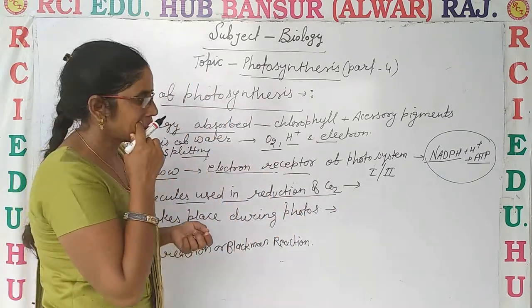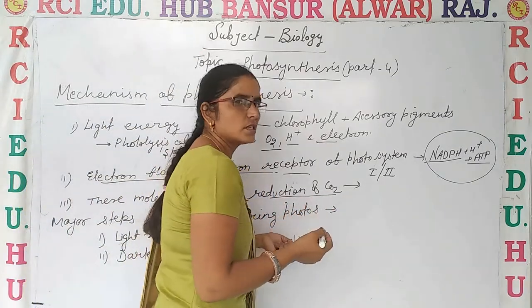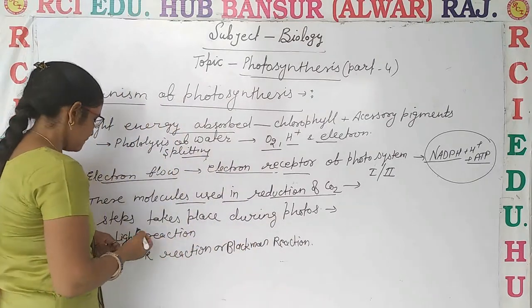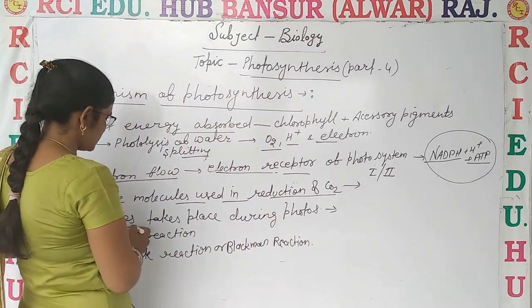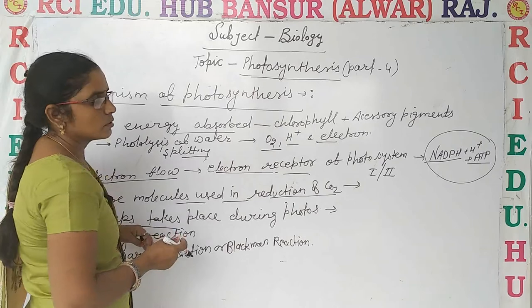This energy stored in NADPH + H⁺ and ATP is then utilized in the reduction of CO₂, and the process of photosynthesis — the production of glucose — takes place.